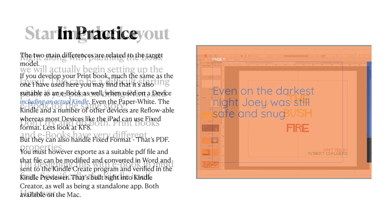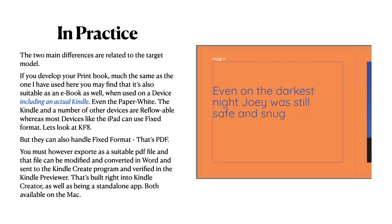In practice, this started life as an ordinary print book. The two main differences are related to the target model. If you develop your print book much the same as the one I've used here, you may find that it's also suitable as an e-book when used on a device, including an actual Kindle. By device I mean iPad or anything like that, even the Paperwhite. The ancient model Kindle I use for examples is a Kindle Keyboard — a very early model, about 2010.